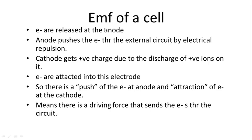When we talk about EMF of a cell, the electrons are released at the anode. The anode pushes the electrons to the external circuit by electrical repulsion. The cathode gets positive charge due to the discharge of the positive ions — that is, the copper ions at the copper cathode take up two electrons and are converted into copper. So the cathode gets positive charge due to the discharge of positive ions on it.